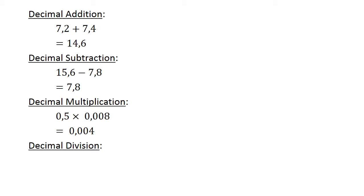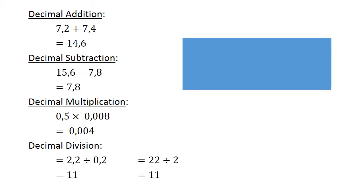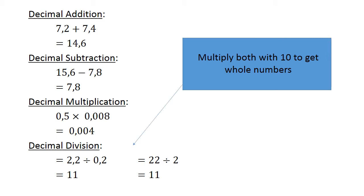Decimal division: 2.2 divided by 0.2. Multiply both by 10 to get whole numbers: 22 divided by 2 equals 11.